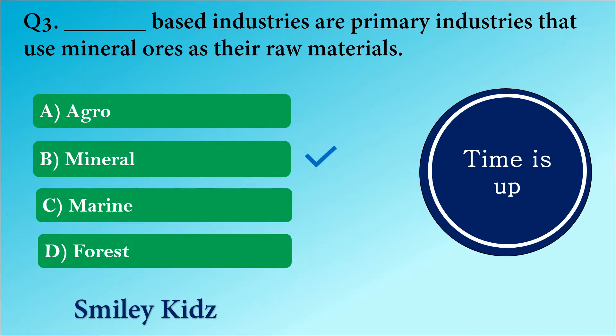The right answer is option B. Mineral. Mineral based industries are primary industries that use mineral ores as their raw materials.